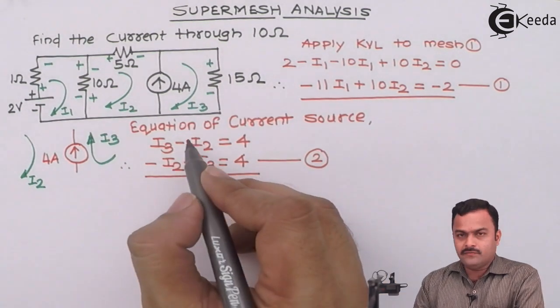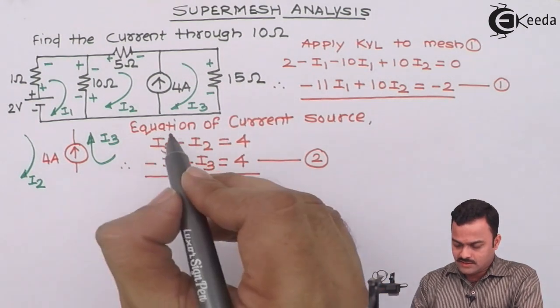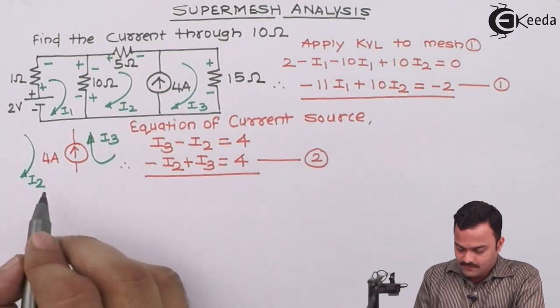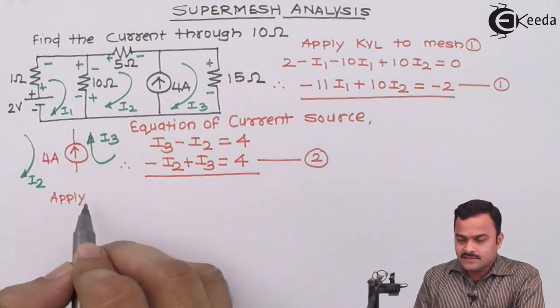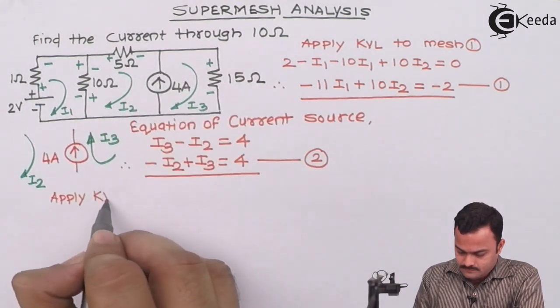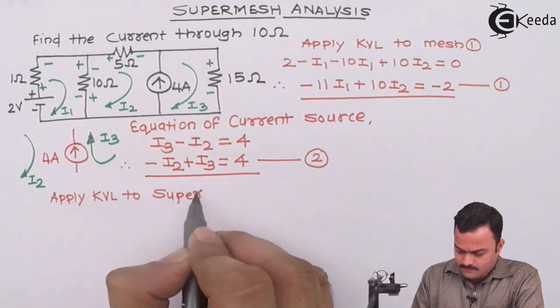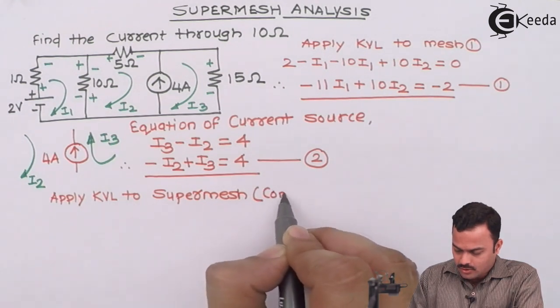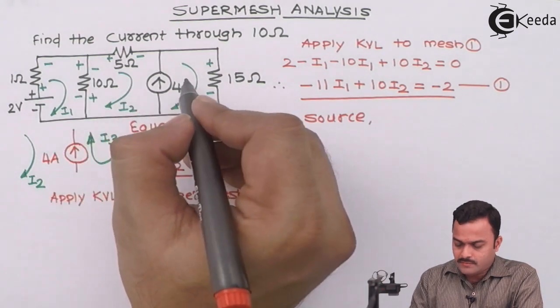So we got one equation without applying a KVL to any of the loop. So we will get a second equation without applying a KVL to super mesh, which is nothing but a combination of two mesh. So I will write it properly. Super mesh is nothing but a combination of mesh number 2 and mesh number 3.